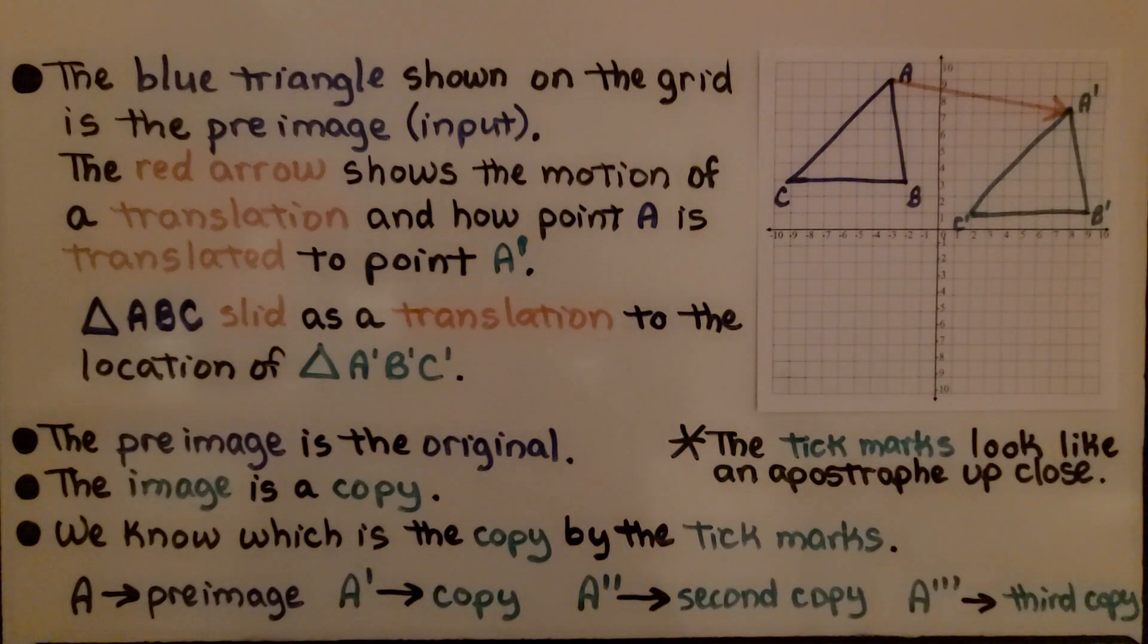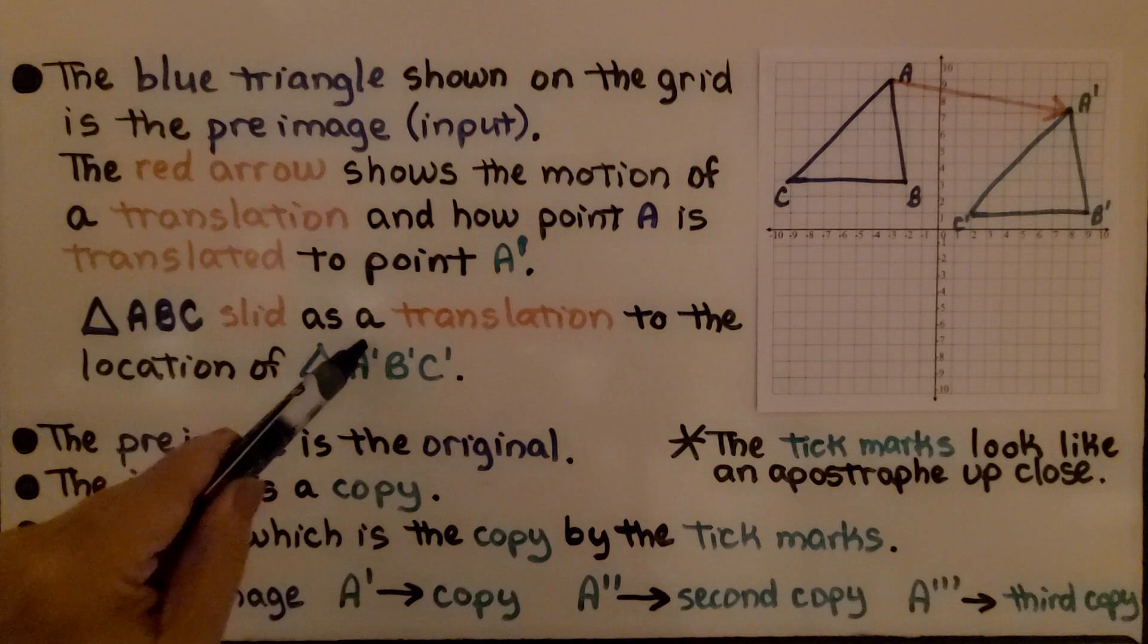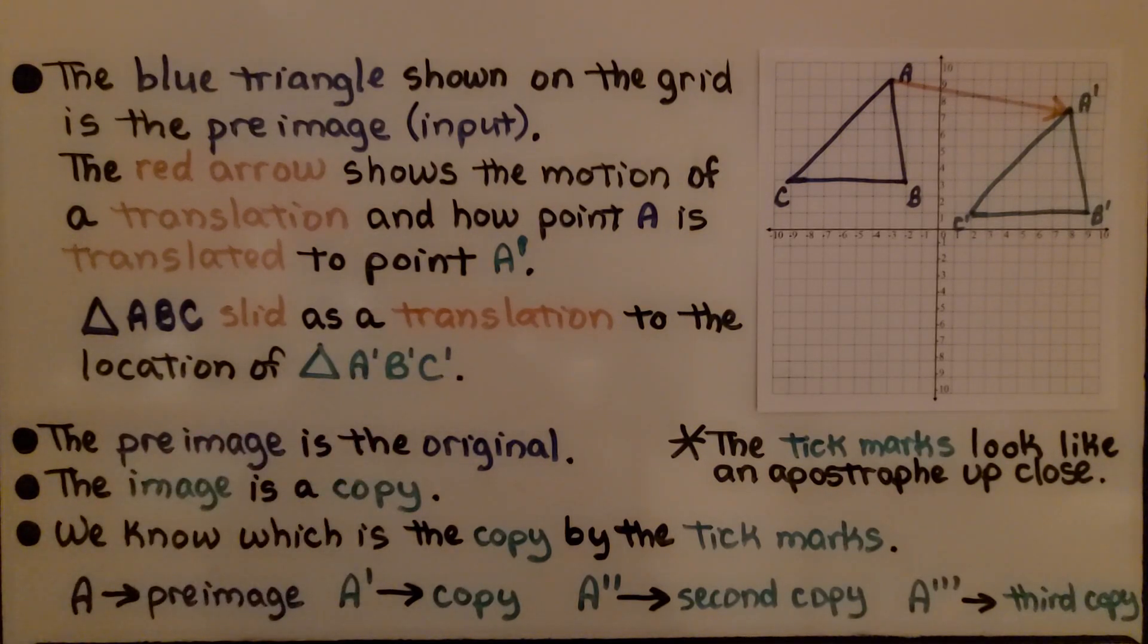We read that as A prime. Triangle ABC slid as a translation to the location of triangle A prime, B prime, C prime. The pre-image is the original.